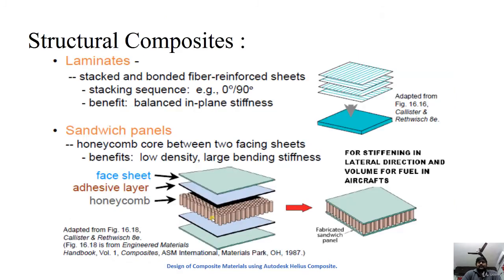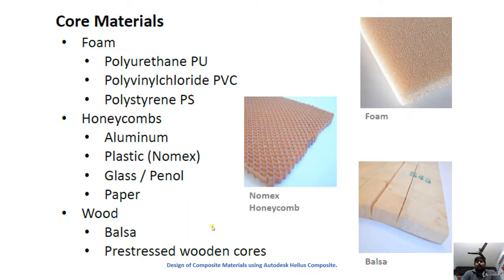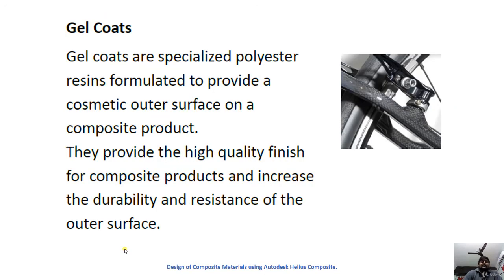For core materials in sandwich structures, several types are used. Some cores are made of foam, such as polyurethane, polyvinyl chloride, or polystyrene foams. Others use honeycomb structures made of aluminum, plastics, or paper. Wooden cores can be made of balsa wood or pre-stressed wood cores.